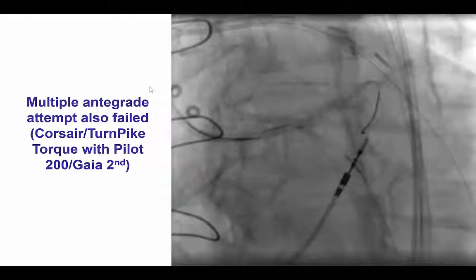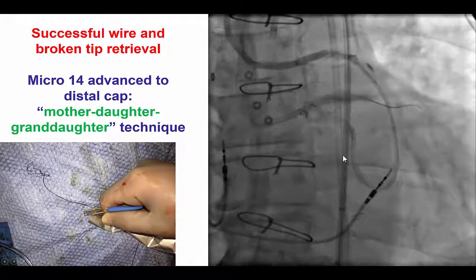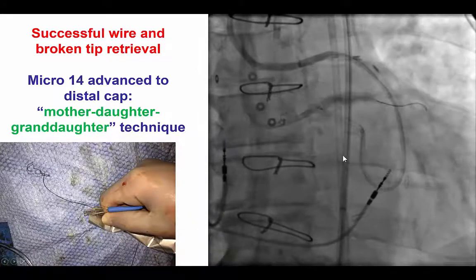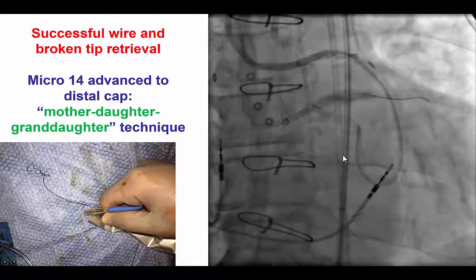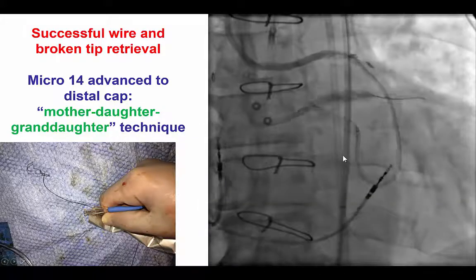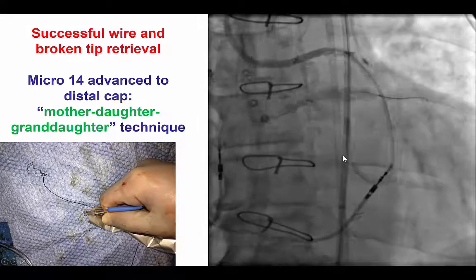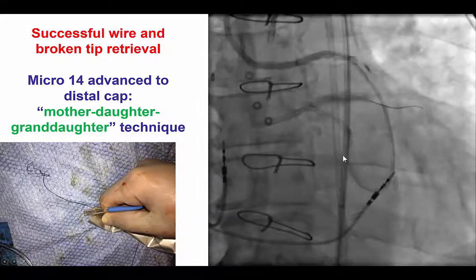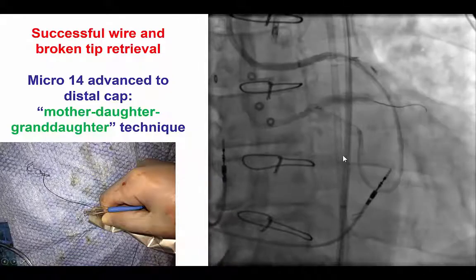We tried multiple antegrade attempts to advance a guidewire, and then tried several retrograde microcatheters including a Caravel and a Turnpike, but we were unable to advance anything in either the retrograde or antegrade direction. That process took several hours. We were unable to remove the retrograde guidewire — it was frozen — and we could not advance anything in either direction.